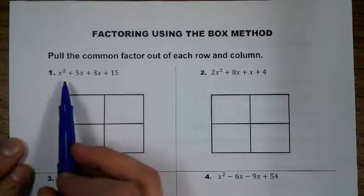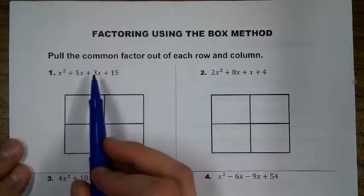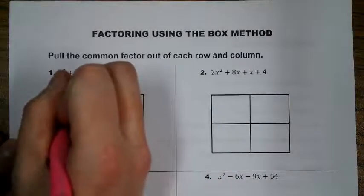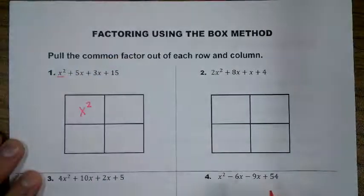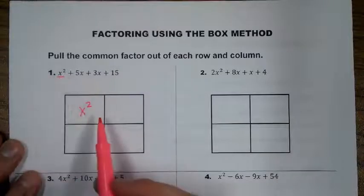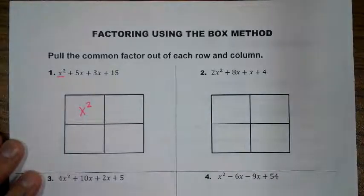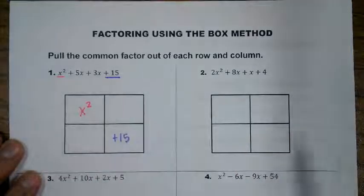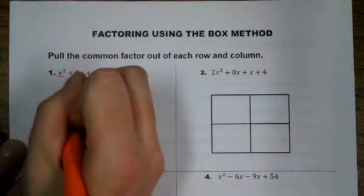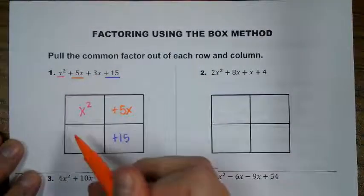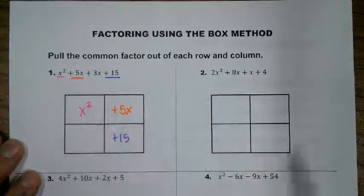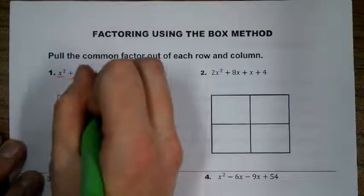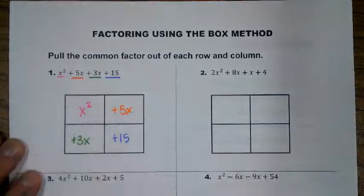We are given this polynomial with four terms. When you're given a polynomial of four terms, you want to go ahead and place these back inside your box — we're doing the opposite of what we did when we multiplied. You always take your x squared term and put it in your first box, and then your constant term goes in your last box. Your other two x terms go in the second and third boxes. It doesn't matter if you put the 5x here or here — you'll end up with the same answer.